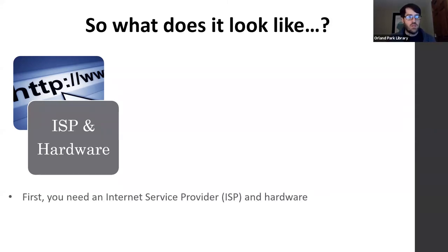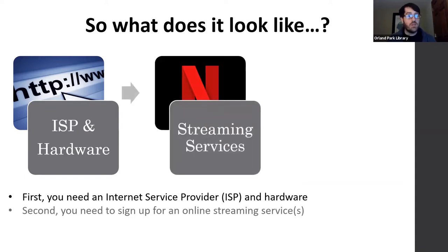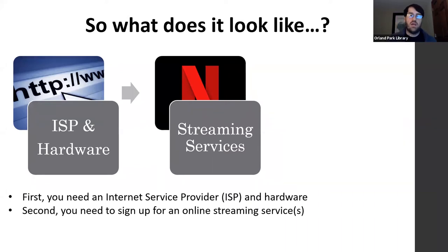First, you need an internet service provider and hardware. Most of you probably already have an ISP — AT&T or Comcast. I live in DuPage County and have WOW internet. The ISP provides the service; the hardware translates that service into your home and gives you internet access. You need streaming services — you need to sign up for them and figure out which ones are right for you. Some cost more than others, some offer more than others. It really is about catering to your particular viewing needs.